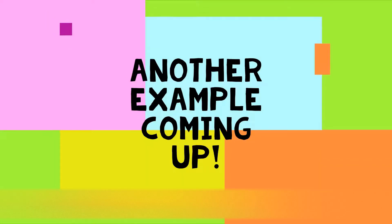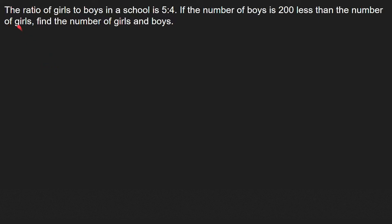Another example: the ratio of girls to boys in a school is 5 is to 4. If the number of boys is 200 less than the number of girls, find the number of girls and boys. This means the students in the school can be divided into groups of 9, with each group containing 5 girls and 4 boys.